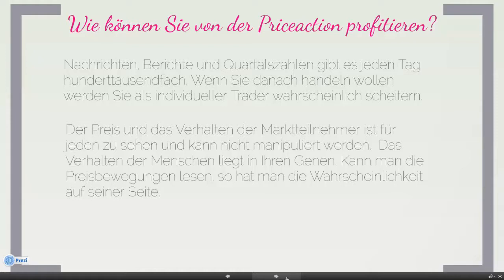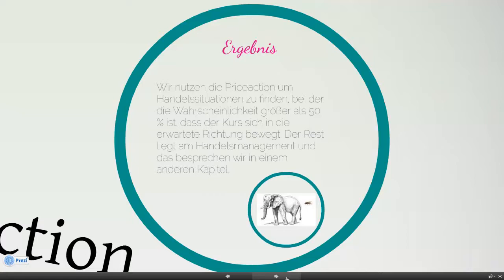Auf Basis dieser Informationen aus der Vergangenheit und der aktuellen Preisbewegung versuchen wir eine Entscheidung zu treffen, ob wir ein Instrument kaufen oder verkaufen. Wir können in beide Richtungen handeln. Wir handeln Long – das bedeutet, wir kaufen ein Instrument, um es zu einem höheren Preis wieder zu verkaufen. Oder wir handeln Short – das heißt, wir verkaufen erst etwas, das wir noch nicht besitzen, um es zu einem niedrigeren Preis wieder einzukaufen. Die Spanne dazwischen ist der Gewinn.